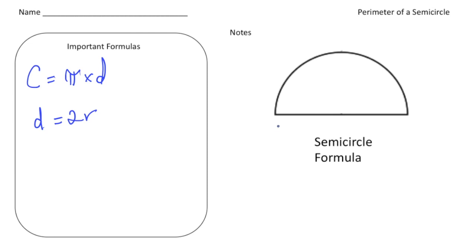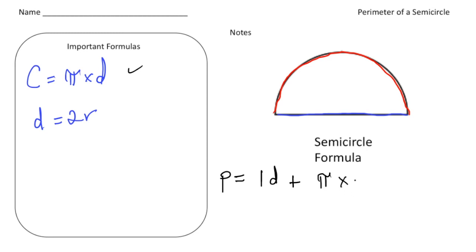To come up with our own formula, we have to first take the diameter of the circle, and to that we need to add the distance of halfway around the circumference. So to get the perimeter of a semicircle, it's going to be the blue part, which is the diameter — so 1d. But then we need to add the half of the circumference. The formula for circumference is pi times d, so it's going to be pi times d divided in half. This gives us what we need to find the perimeter of a semicircle.